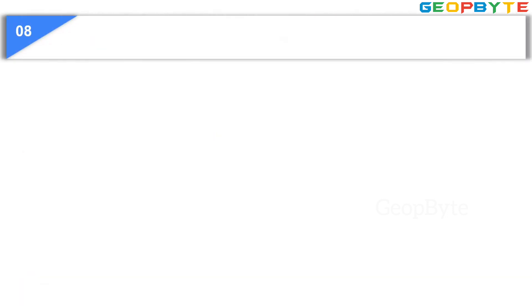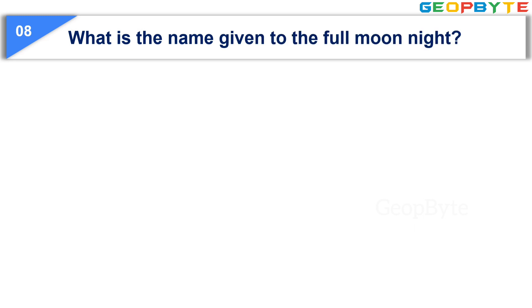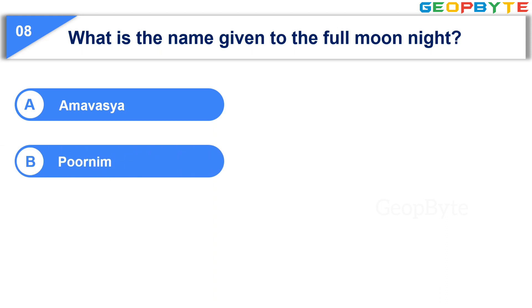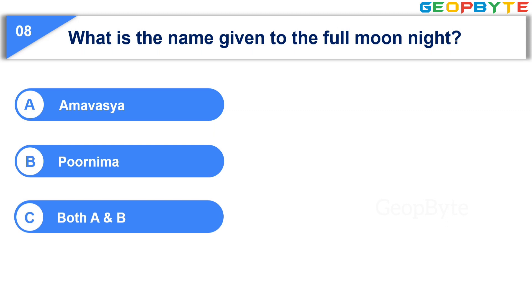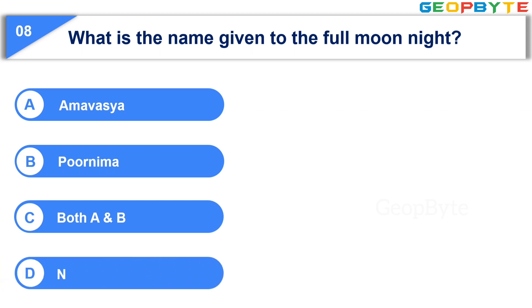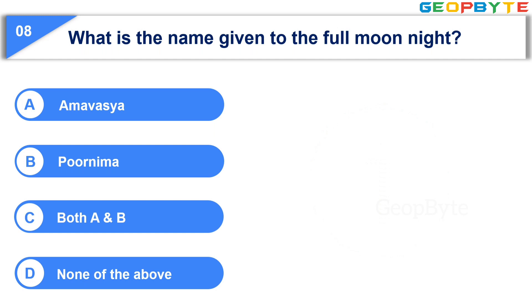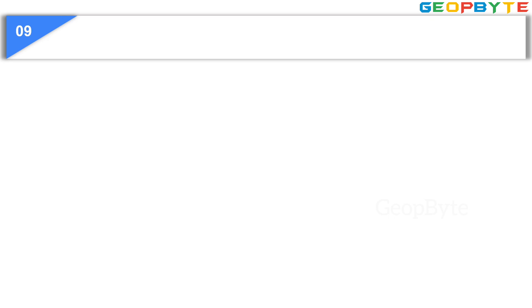The eighth question is: What is the name given to the full moon night? Option A: Amavasya. Option B: Poornima. Option C: Both A and B. Option D: None of the above. Your time starts now. Your time is up and the correct answer is Option B: Poornima.